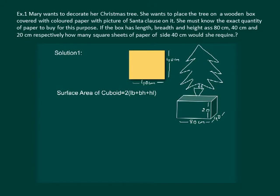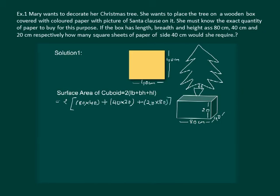We know the formula for surface area of a cuboid is 2 × (lb + bh + hl). Let us substitute the values: 2 × (80 × 40 + 40 × 20 + 20 × 80) cm². On solving we get 2 × 5600 cm², which is equal to 11,200 cm².